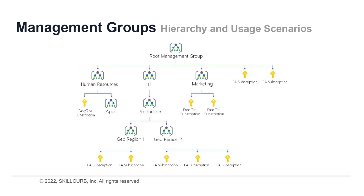Some key things to note about management groups: 10,000 management groups can be supported in a single directory. A management group tree can support up to six levels of depth, and this limit doesn't include the root level or the subscription level. Each management group and subscription can only support one parent, each management group can have many children, and all subscriptions and management groups are within a single hierarchy in each directory.